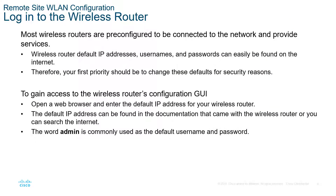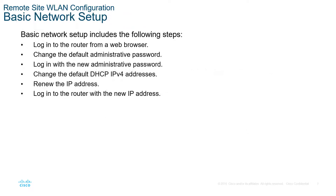What you do is essentially log into the router itself. Normally the default username and password are admin, but it's dependent on your device. A basic setup would be: log into the router, change the default admin password, look at the IP information it's going to be handing out to the LAN, maybe change it if necessary, renew your IP address, and log back into the router if necessary.